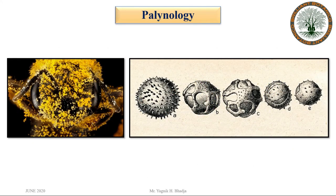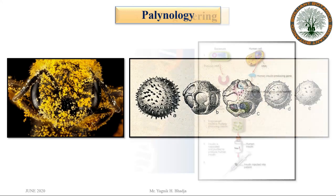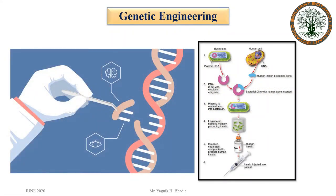Another branch is palynology, in which we study pollen grains in relation to taxonomy and evolution. Another branch is genetic engineering, in which we study the editing, removing, or repairing of parts of genetic material, thereby changing the phenotype of the organism.